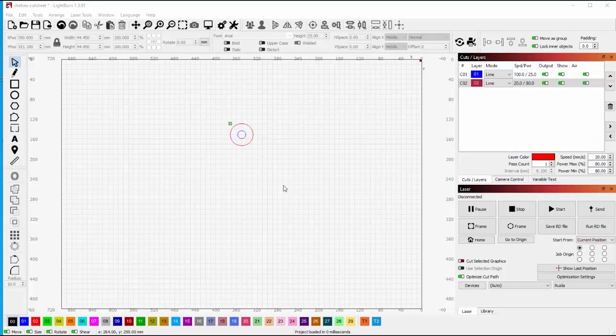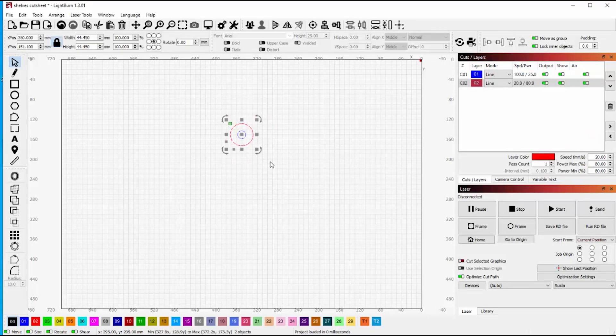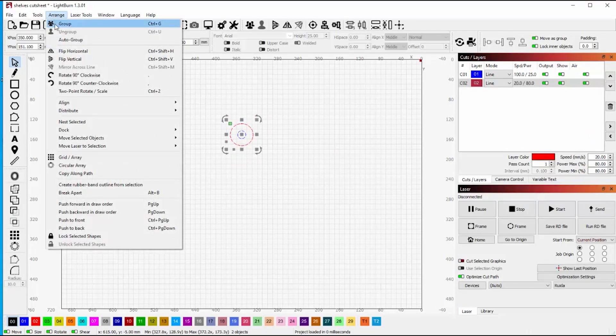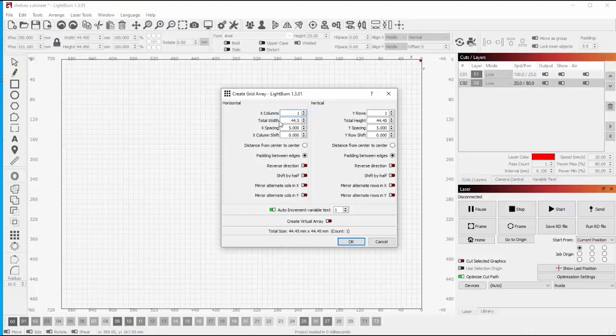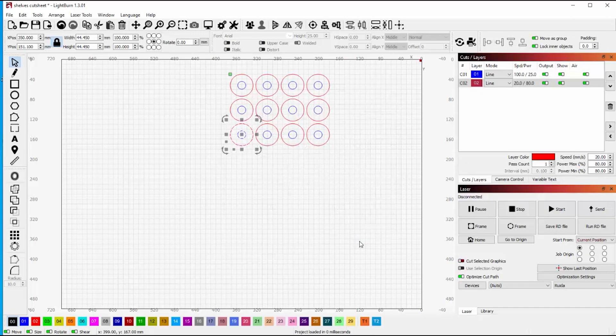I used to lay out cut sheets in Illustrator, but now that I'm more comfortable with Lightburn, I just bring in something like this shelf and I use the arrange function. I'm going to use a grid array and I can say how many I want on the X and the Y. In this way, I can make my cut fit whatever material I'm using at the time.